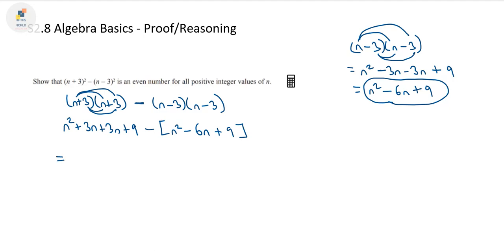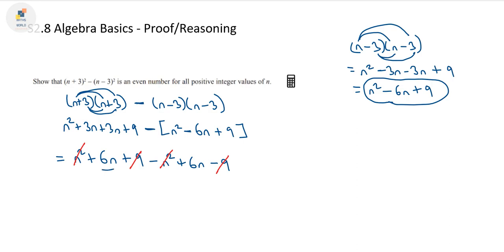So tidying this up, we've got n² + 6n + 9, then minus everything in the brackets. The first term gives us -n². We've got minus(-6n) which becomes +6n. And then minus(+9) which is -9. Now we can see the +n² cancels with -n², and +9 cancels with -9. That leaves us with +6n and another +6n — so altogether we've just got 12n.